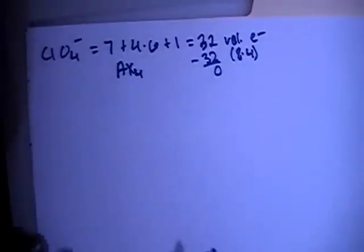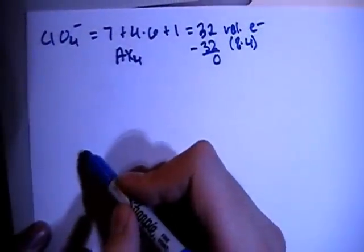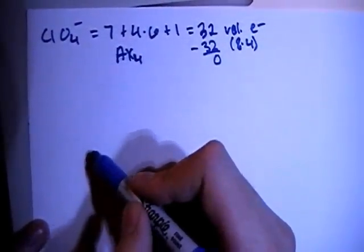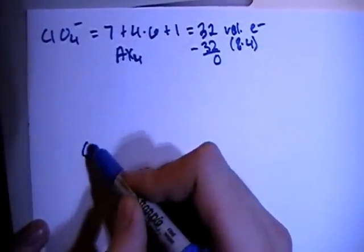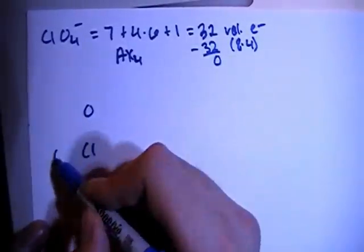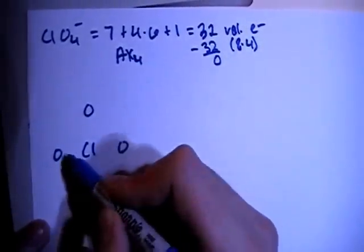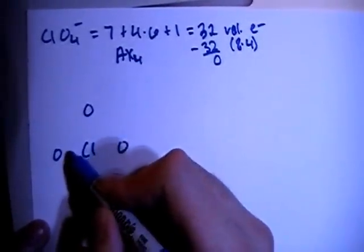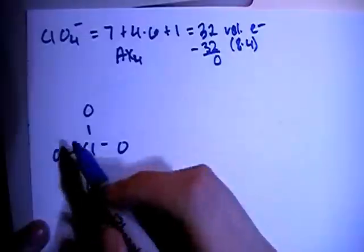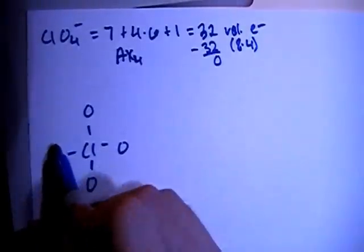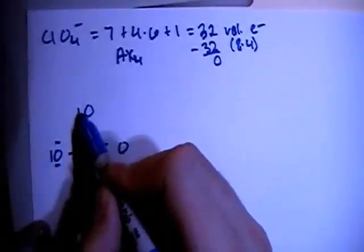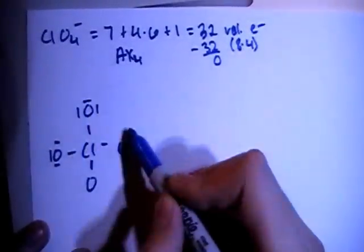So we can go ahead and start to draw this compound. We have the chlorine in the center, and there are 4 oxygens. We can go ahead and start by single bonding all of them, and then filling in the rest of the octet for each of the oxygens.